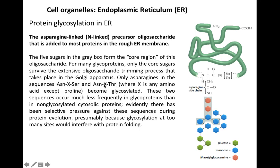The third amino acid in the sequence needs to be either serine or threonine. So only those asparagines followed by any amino acid except proline, and then followed by serine or threonine, will be glycosylated. This is written as the Asn-X-Ser or Asn-X-Thr sequon. If these two conditions are not met, the asparagine will not be glycosylated, and the polypeptide chain will keep growing into the ER lumen without glycosylation.